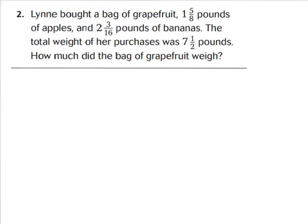For question number two, it says: Lynn bought a bag of grapefruit, one and five-eighths pounds of apples, and two and three-sixteenths pounds of bananas. The total weight of her purchase was seven and a half pounds. How much did her bag of grapefruit weigh? We can work backwards to figure this out. The equation would be: G (for grapefruit) plus one and five-eighths plus two and three-sixteenths equals seven and one-half.